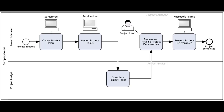Instead of using the IT system element within the process model, some organizations will instead store this information within the attributes for the specific task. So it is important to consider what value it will bring to add these elements to the process model. It may not be necessary to include every system used for every task, such as OneDrive or Microsoft Word.